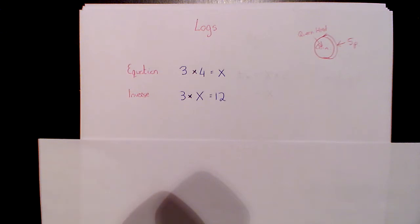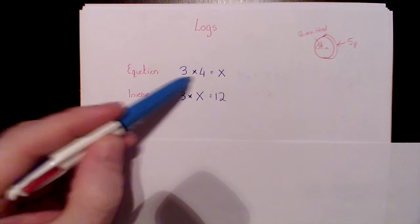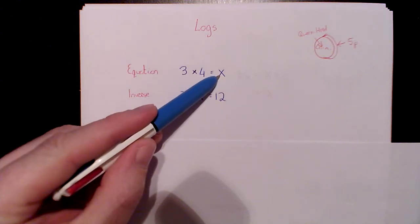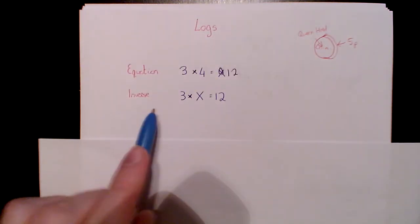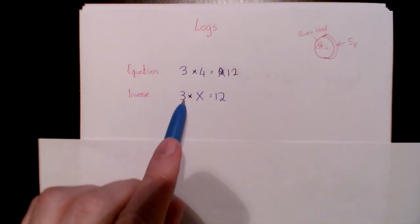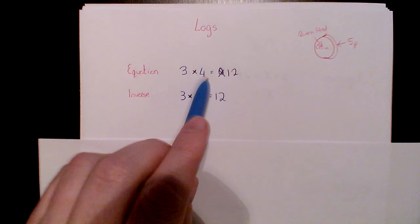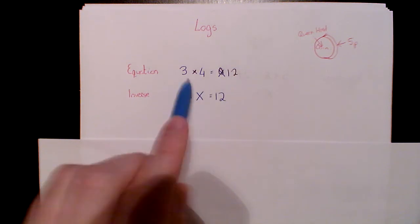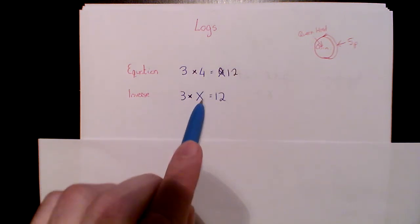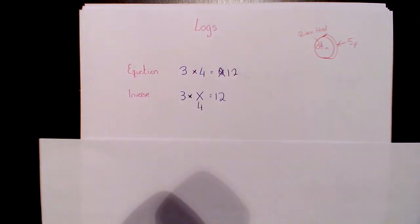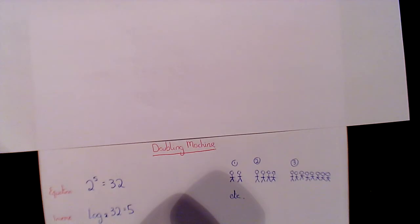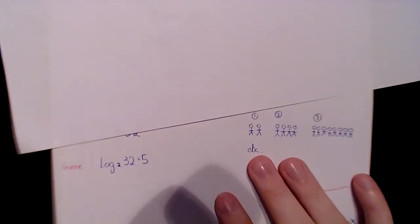If we look at this equation: 3 multiplied by 4 equals a number, I could just multiply 3 by 4 and realise the number is 12. But I could look at it in a different, inverse way — I could say 3 multiplied by a number is 12. Using algebra or division, you'd get that number to be 4.